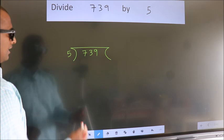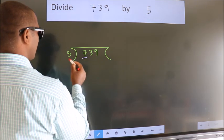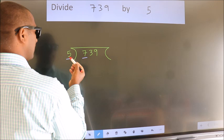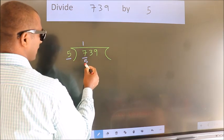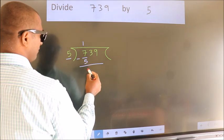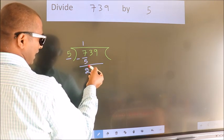Next. Here we have 7, here 5. A number close to 7 in the 5 table is 5 once, 5. Now we subtract. We get 2. After this,